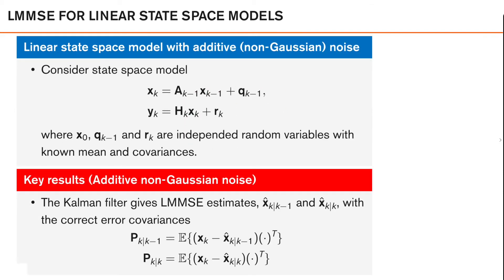If we consider a slightly relaxed version of our linear state space model — where we still require linear motion and measurement models with noise processes q_{k-1} and r_k entering additively — we do not require that the prior or noise processes be Gaussian. The only requirements are that these are independent random variables in time and with each other, and that we know their means and covariances. A key result for this model family is that the Kalman filter produces the LMMSE estimator both in the prediction and the update, and also computes the correct error covariances P_{k|k-1} and P_{k|k}.